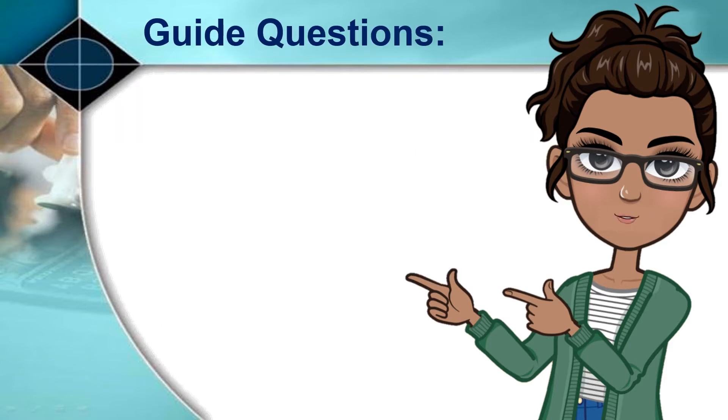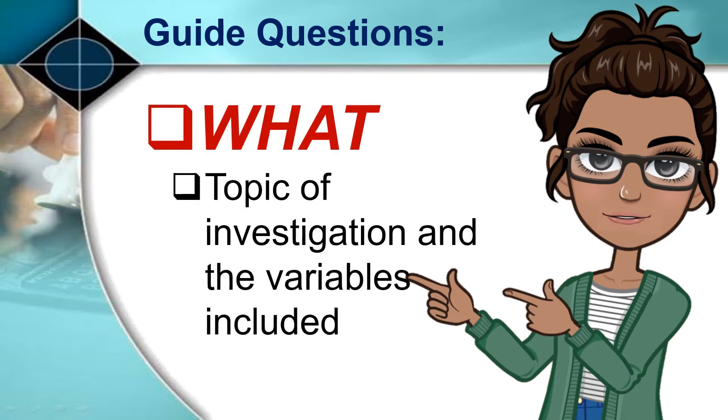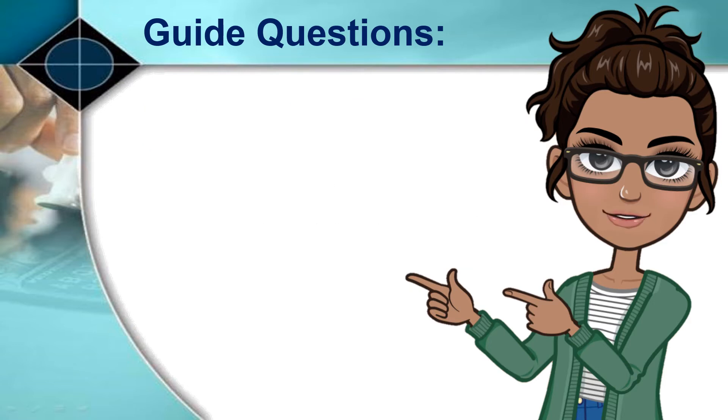This section discusses the parameters of the research in paragraph form. It answers the basic questions. One: What? The topic of investigation and the variables included.